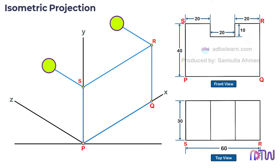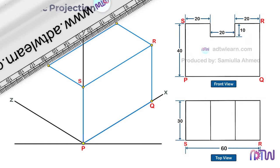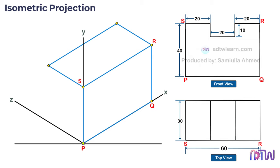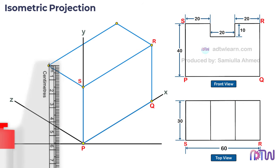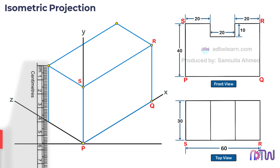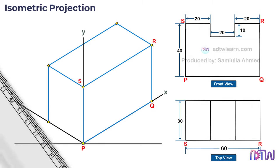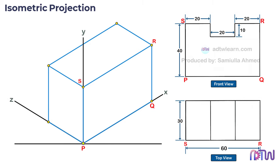At the end, join these two points. This is the outline for the top view. After this, draw a vertical line of 40 millimeters from this point since the object's height is 40 millimeters, then join these end points. This is the outline for the side view of the object. Since no side view is provided in the orthographic projections, there are no additional details visible from the side view, so we can darken these lines.